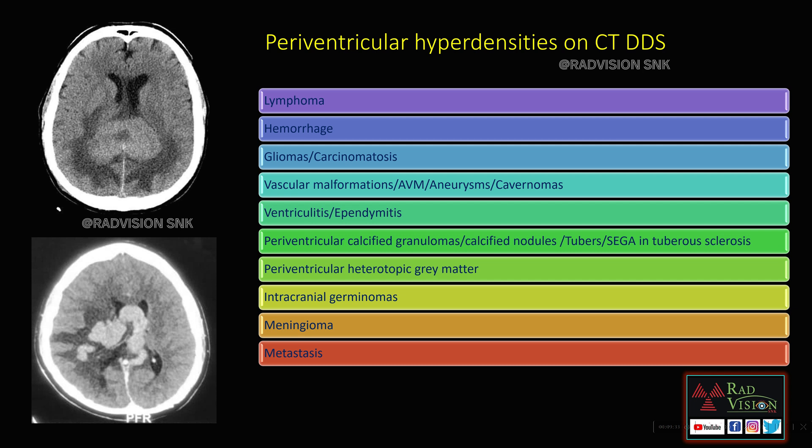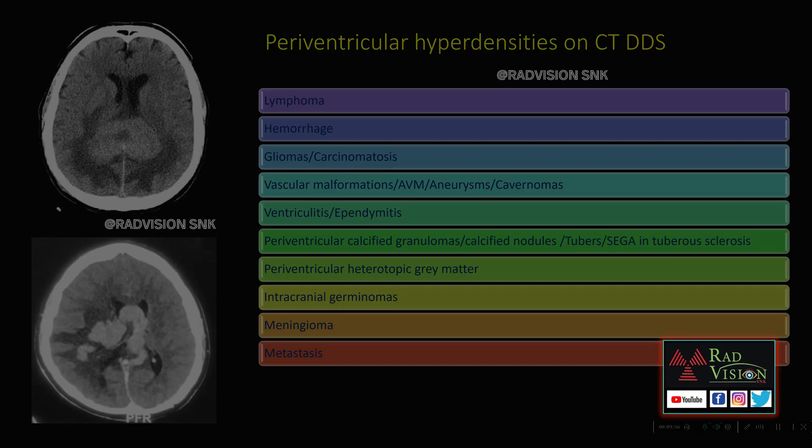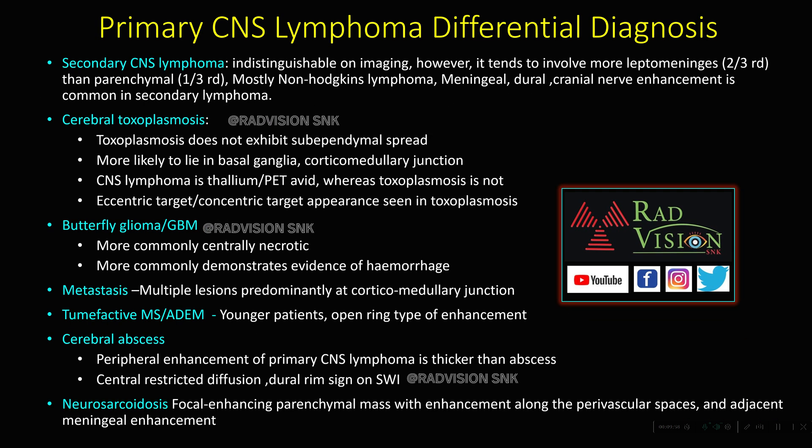Other differential diagnoses of lymphoma that are similarly hyperdense on CT include: hemorrhage, gliomas, carcinomatosis, vascular malformations (AVM, aneurysm, cavernomas), ventriculitis or ependymitis, periventricular calcified granulomas or calcified nodules, tubers as SEGA seen in tuberous sclerosis, periventricular heterotopic gray matter, intracranial germinomas, meningiomas, and metastasis.